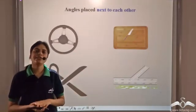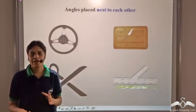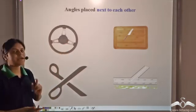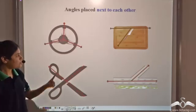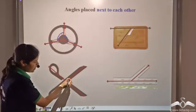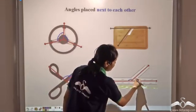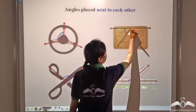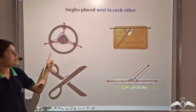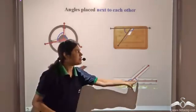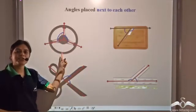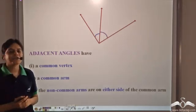Look at these pictures. We see these things in our daily life all around us. If you observe carefully, you'll see certain angles being formed. These angles are placed next to each other. Such angles which are placed next to each other are called adjacent angles.